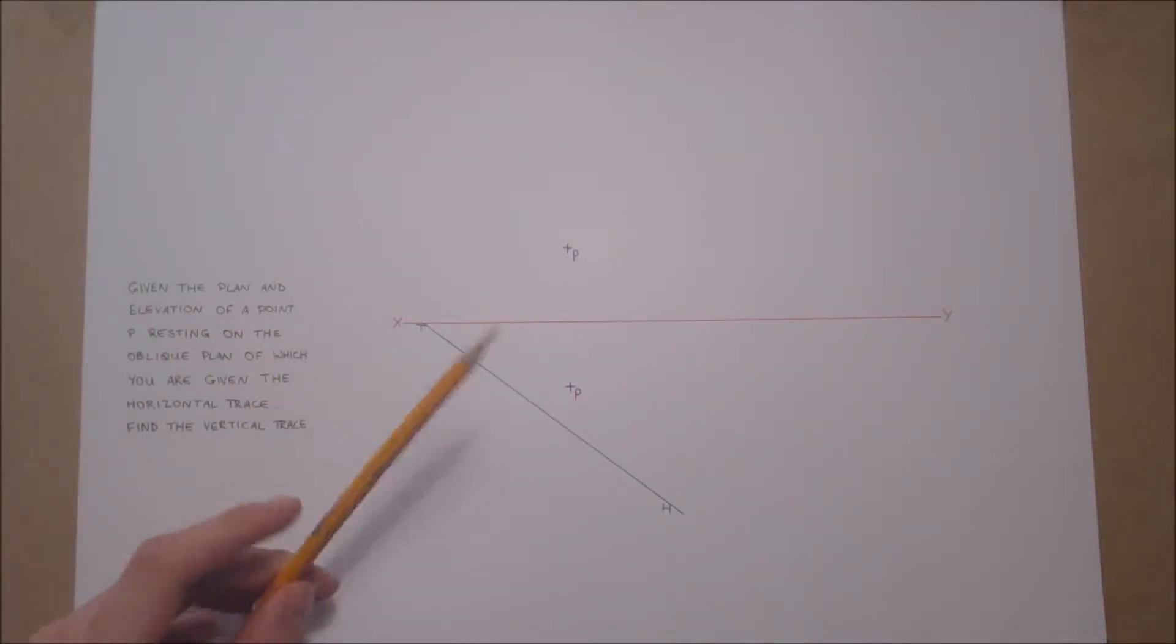Given the plan and elevation of point P, resting on the oblique plane of which you are given the horizontal trace, find the vertical trace.